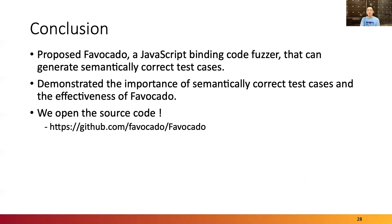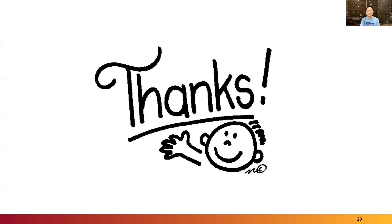In this work, we proposed Favocado for fuzzing binding code with semantically correct test cases and demonstrated its effectiveness. Please refer to our paper for full details and discussions on limitations. Thank you.